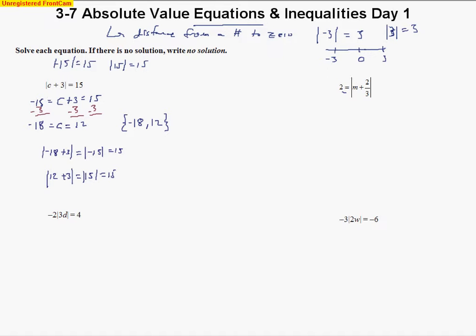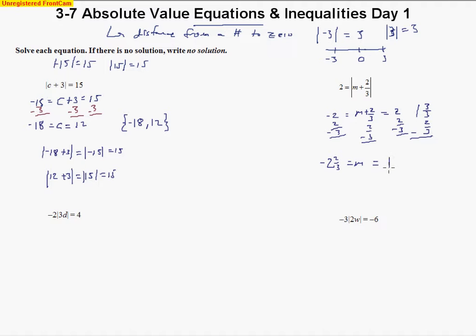The next problem looks a little different because there's a fraction, and the absolute value is on the right-hand side of the equal sign — but it still equals 2. So we set the expression equal to positive 2 and negative 2. When the signs are the same we add, giving negative 2 and 2 thirds as one value of M. For the other, we subtract by borrowing, changing to thirds, and we get 1 and 1 third. Those two values of M go into the solution set.